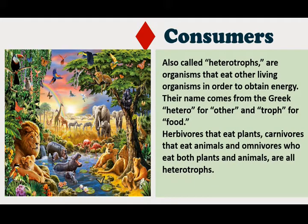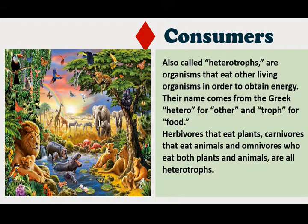The second form of biotic component are the consumers, also called heterotrophs, because these organisms eat other living organisms in order to obtain energy. The word heterotroph is derived from Greek — 'hetero' means others and 'troph' means food. The herbivores that eat plants, carnivores that eat animals, and omnivores which eat both plants and animals are all heterotrophs. Heterotrophs probably evolved when some organisms discovered they could eat autotrophs as a source of energy instead of creating their own energy and organic material.